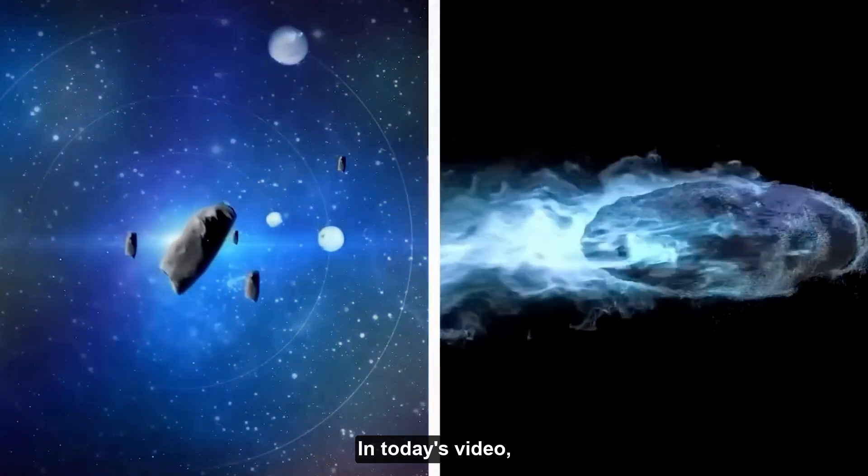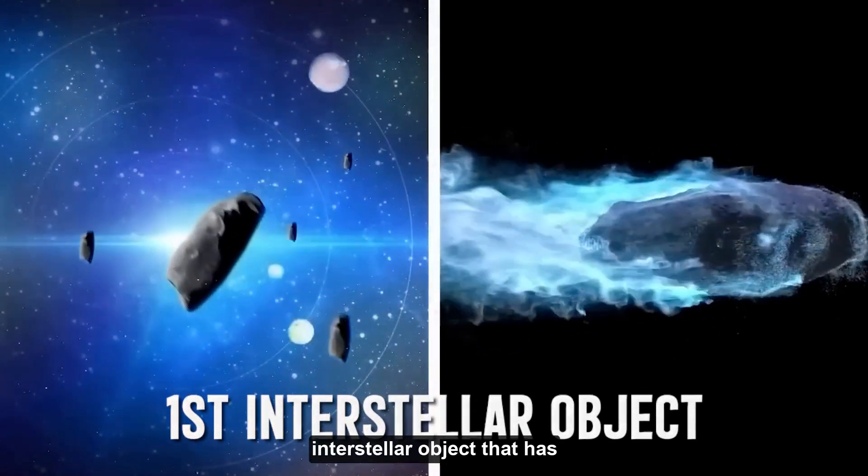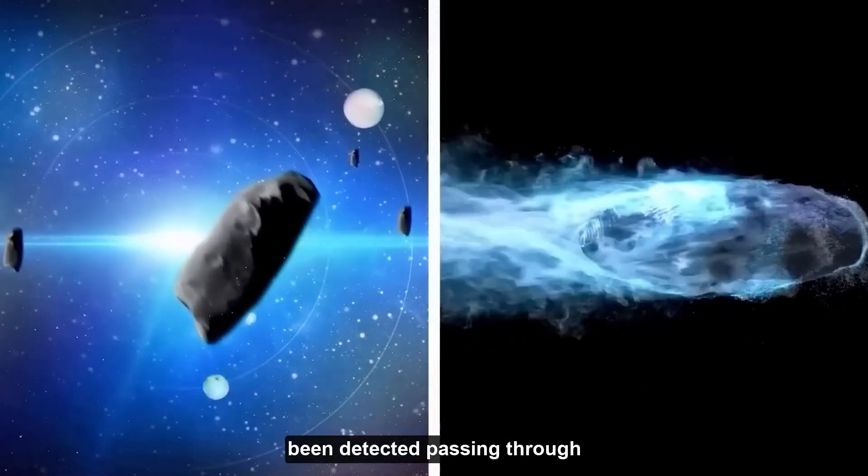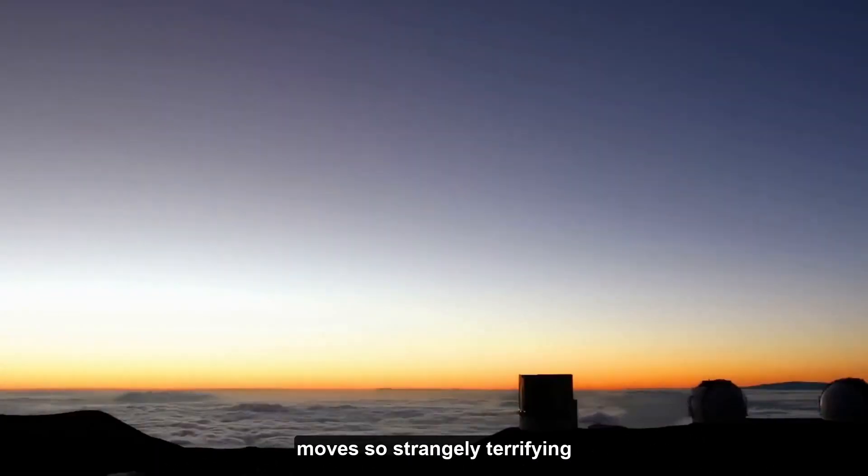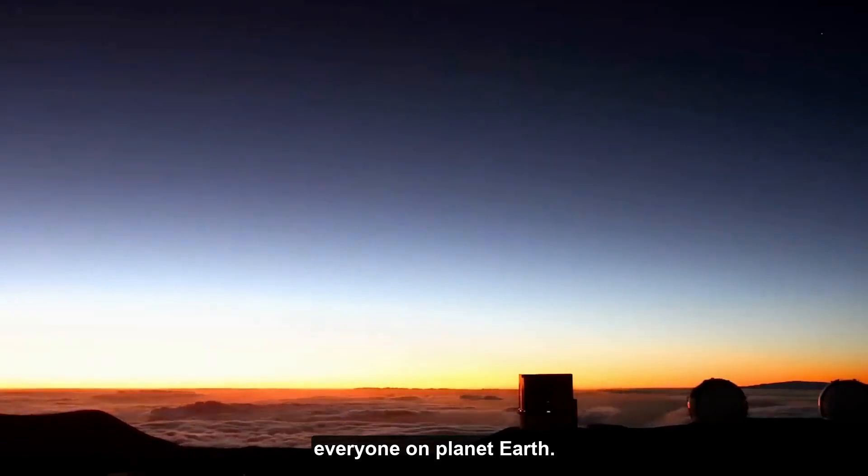In today's video, we will talk about the first interstellar object that has been detected passing through our solar system and why it moves so strangely, terrifying everyone on planet Earth.